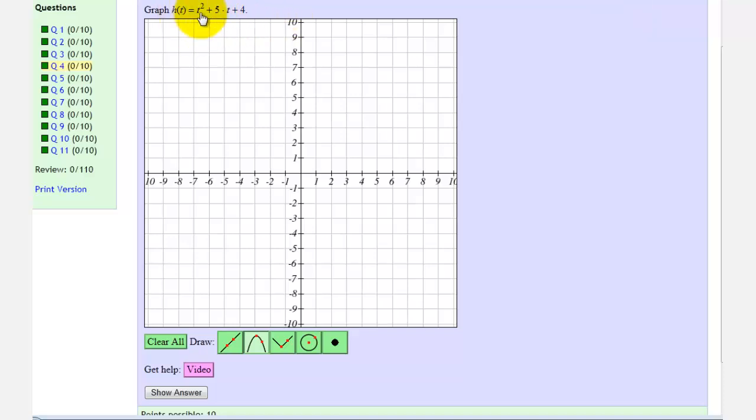We want to graph the quadratic function h of t equals t squared plus 5t plus 4 using this online graphing tool.